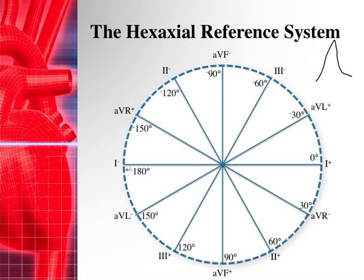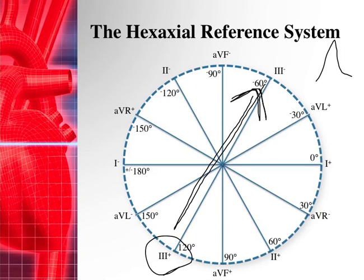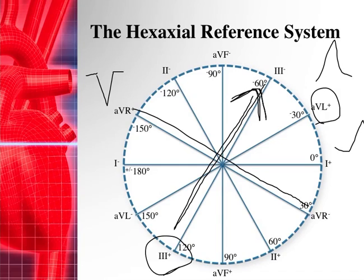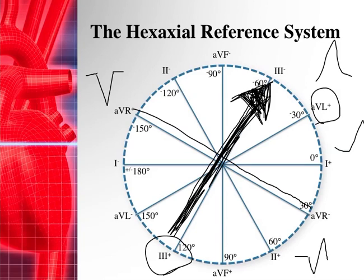If the QRS axis is going in a particular direction, we can predict how each lead looks. For example, if the axis is pointing this way, Lead III's positive electrode is on the opposite side, so Lead III would be almost completely negative. In aVL, whose positive electrode is over here, it would be mostly positive. As for aVR — if the QRS axis is here, aVR is pretty much perpendicular, giving an equiphasic complex with both negative and positive aspects.